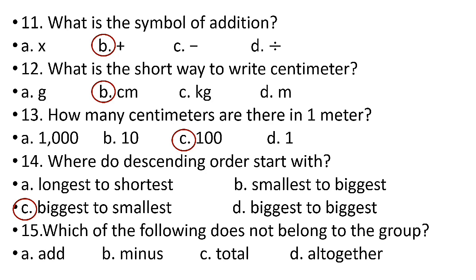Number fifteen: which of the following does not belong to the group? Options: a) add, b) minus, c) two thou, d) all together. The answer is minus, because minus belongs to subtraction. Add, total, and all together all have the same meaning and belong to addition.